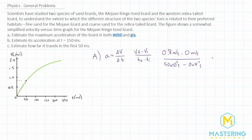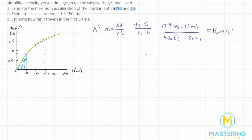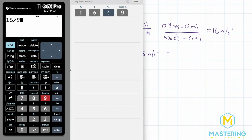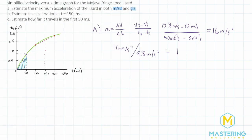So that gives us an estimation of the maximum acceleration of 16 meters per second squared. And now in the question, they also ask us to give the maximum acceleration in both meters per second squared and in G's. So what we'll do is we'll take our value here, 16 meters per second squared, and then we'll take that and divide it by G, which is 9.8 meters per second squared.